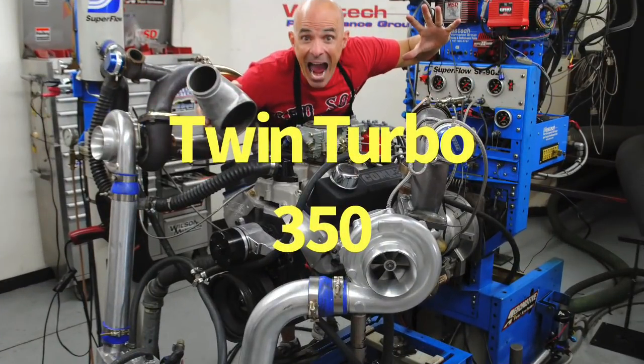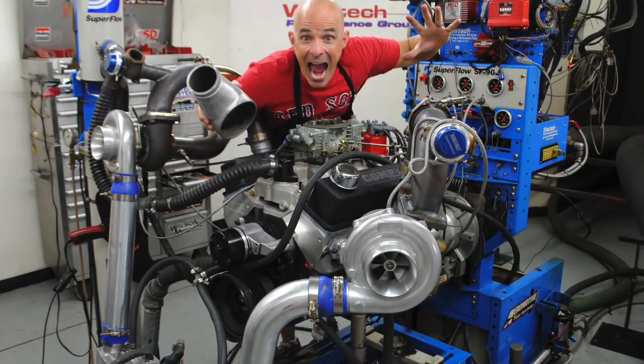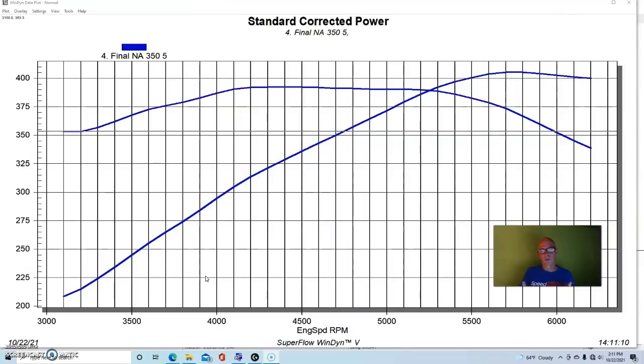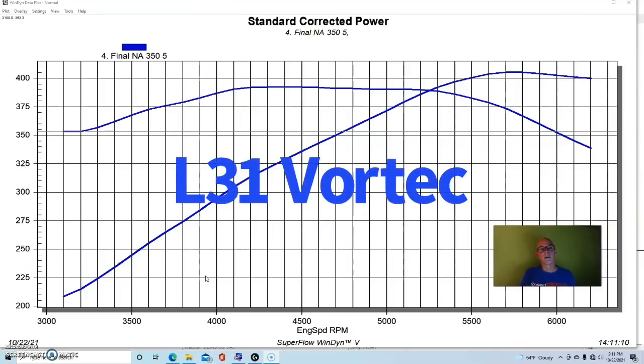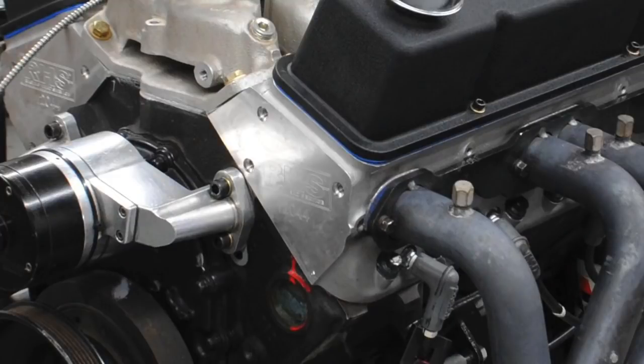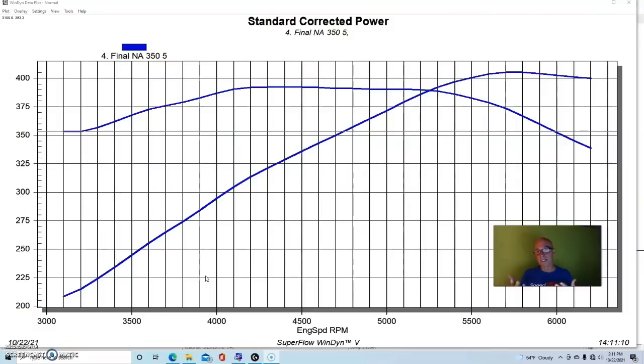Stepping up from the test run on the 305, naturally we would transition to the larger and probably more powerful and likely more prevalent 350. This one actually was originally I think an L31 Vortec headed small block from the wrecking yard out of a truck. For some reason we took the Vortec heads off and replaced them with a set of aluminum CNC ported RHS heads, which was way more cylinder head that we needed.